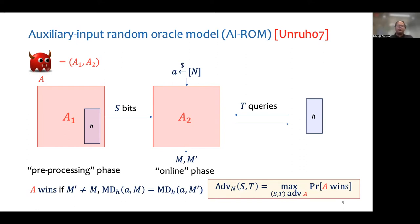We parameterize the advantage in terms of s and t and define it to be the maximum probability of any st-adversary winning in this game. By allowing the adversary to compute any arbitrary s bits of preprocessing, we make it very powerful. Hence, any limitations proved in this model imply very strong security.